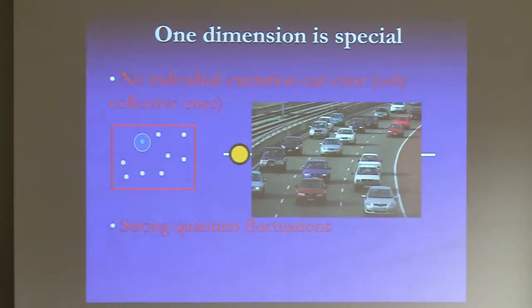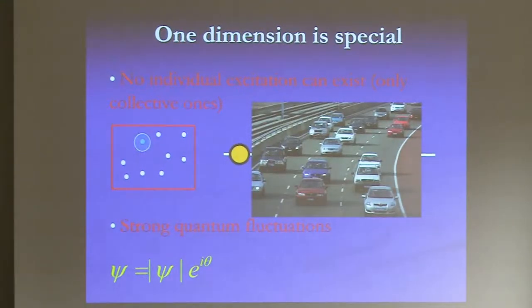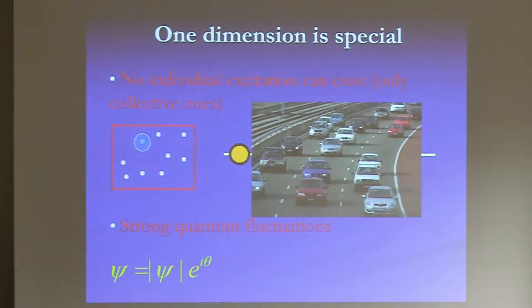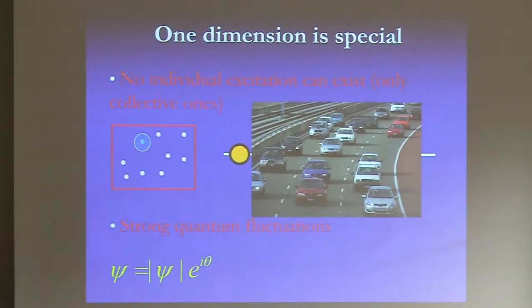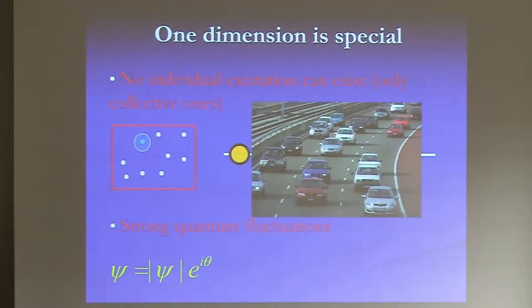The second thing is that in 1D there are usually extremely strong fluctuations due to quantum mechanics or, to some extent, temperature. This kills most of the theoretical tools that we love, like mean field theory, where we say the wave function has a phase that acquires an average value — like in a superfluid — and we expand around this average value. In 1D, quantum fluctuations will destroy the average value, so you have to find other theoretical tools.